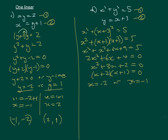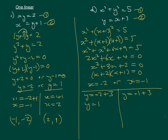Substituting into equation 2: when x is minus 2, y equals minus 2 plus 3, so y equals 1. When x is minus 1, y equals minus 1 plus 3, so y equals 2. Our two solutions are x equals minus 2 with y equals 1, and x equals minus 1 with y equals 2. Notice how the values are paired together. You could also write them as coordinates, or if using different letters like P and Q, write them in equation form.